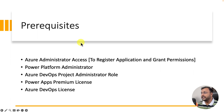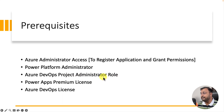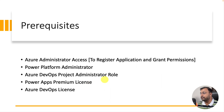First, let me talk about the prerequisites you need to consider when setting up Azure DevOps. You need Azure Administrator access to register the application and grant permissions. You also need Power Platform Administrator access and Azure DevOps project administrator role, because to set up the pipeline and release pipeline you need that role. A minimum Power Apps Premium license is required, as well as a DevOps license at the Azure DevOps side. These are the minimum accesses you need before starting the end-to-end deployment process.